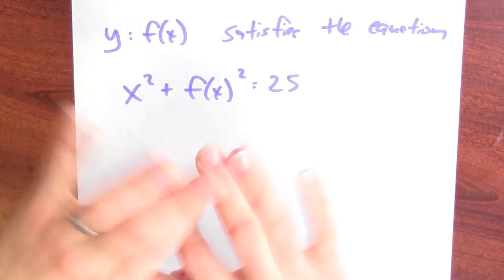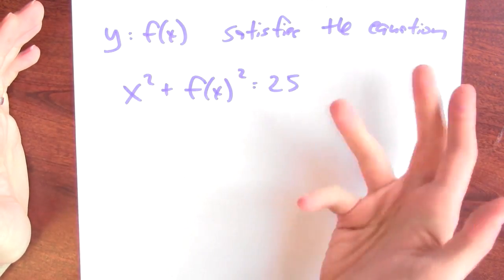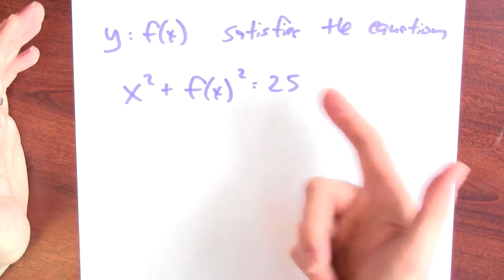So let's say there is a function y equals f of x that satisfies the original equation. Well, then I can write that down. y equals f of x satisfies the equation just means that x squared plus f of x squared equals 25.